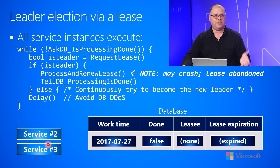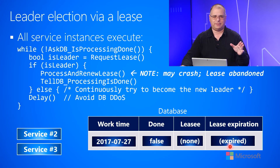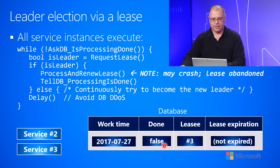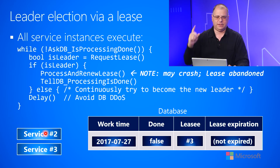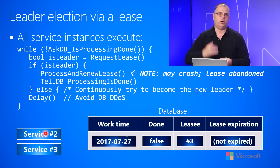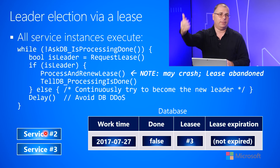These two instances didn't get the lease initially — they both delayed a little bit. The lease has now expired, so no instance has the lease. They loop back around, go to the database, confirm the work is still not done, and request the lease. The database grants the lease to instance three this time. Instance two did not get the lease, so it will delay and keep trying, because instance three may also crash. Instance one should also come back to life via the orchestrator and re-enter the loop.